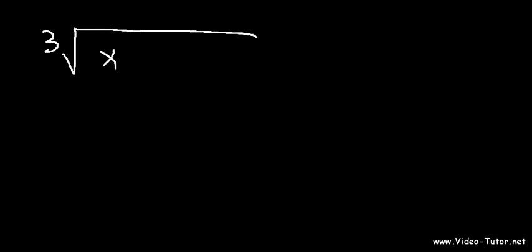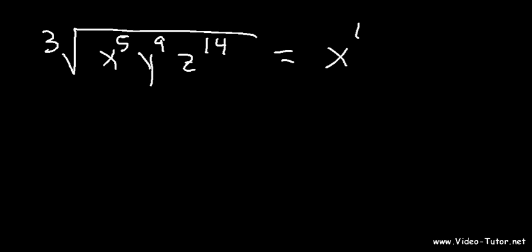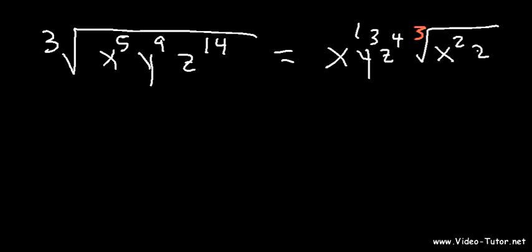Let's try some other problems. Let's say we have the cube root of x to the 5th, y to the 9th, and z to the 14th. How many times does 3 go into 5? 3 goes into 5 one time with 2 remaining, so we put x squared inside. The index number stays 3. How many times does 3 go into 9? 9 divided by 3 is 3, with no remainder. How many times does 3 go into 14? 3 goes into 14 four times; 3 times 4 is 12, and 14 minus 12 is 2, so we have 2 remaining. That's how you can simplify radicals.